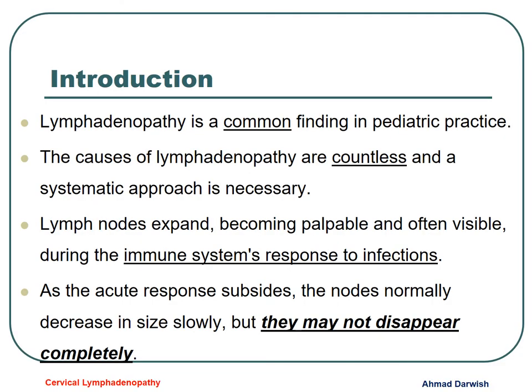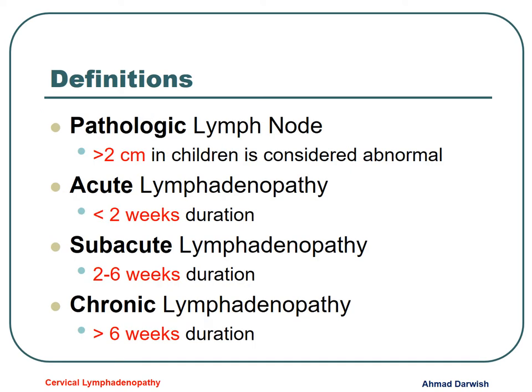Lymphadenopathy is very common in the pediatric population and its causes are countless. Lymph nodes become palpable and visible during an immune response to infection, and when the acute response subsides, these lymph nodes will decrease in size, but they may not disappear. We have to assure the parents that lymph nodes could still be large even after the infection is resolved. To say that a lymph node is pathologic, it should be more than 2 centimeters. We differentiate between acute (less than 2 weeks), subacute (2 to 6 weeks), and chronic (more than 6 weeks).